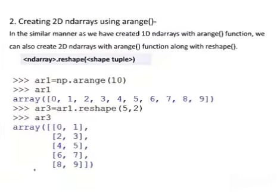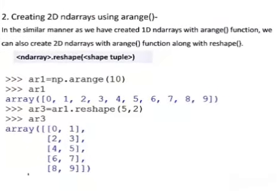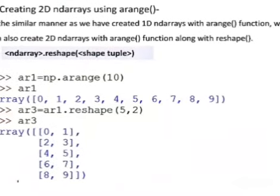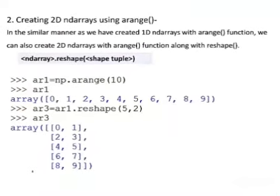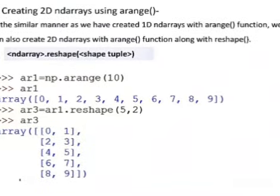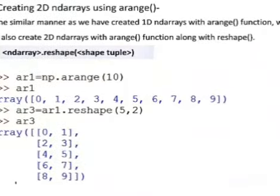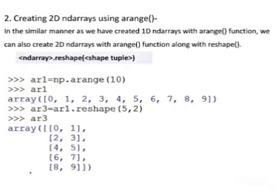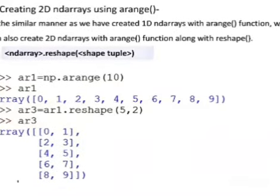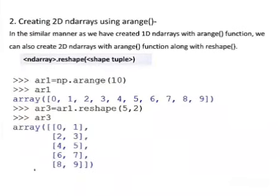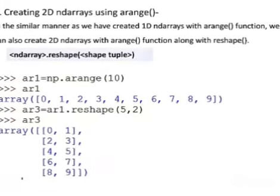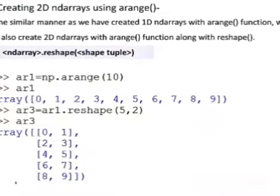We are having another method — the arange method and reshape method — which are used to arrange NumPy arrays in a proper way. In the given example, reshape means total ten elements have been arranged in five rows and two columns, with values 0 to 9 arranged using arange(10) in a single row.